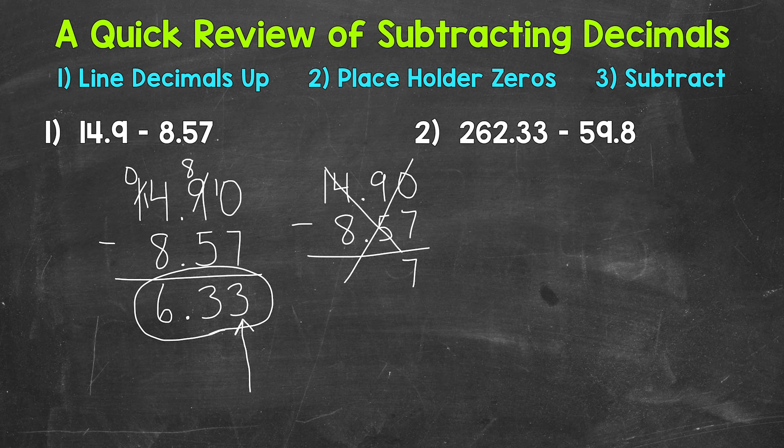Let's move on to number 2 where we have 262 and 33 hundredths minus 59 and 8 tenths. So we will start by lining up our decimals here. So 262 and 33 hundredths minus 59 and 8 tenths. We can use a placeholder 0, so these both go to the hundredths. And now we are able to subtract.